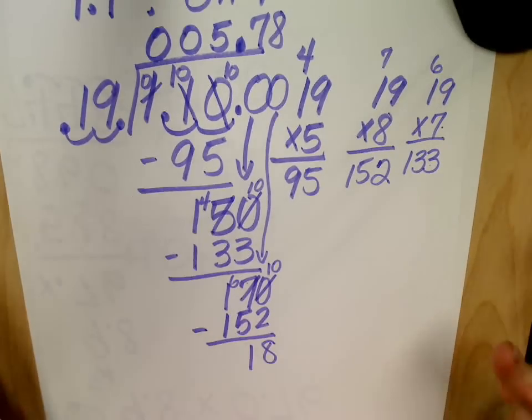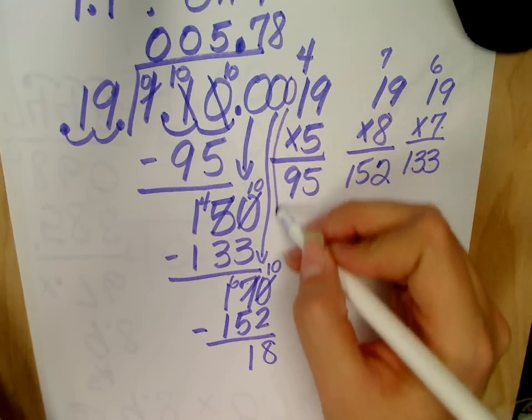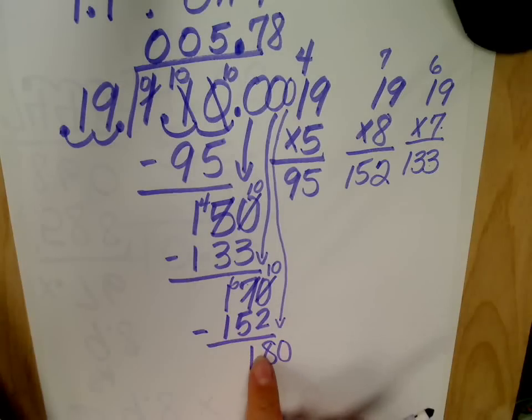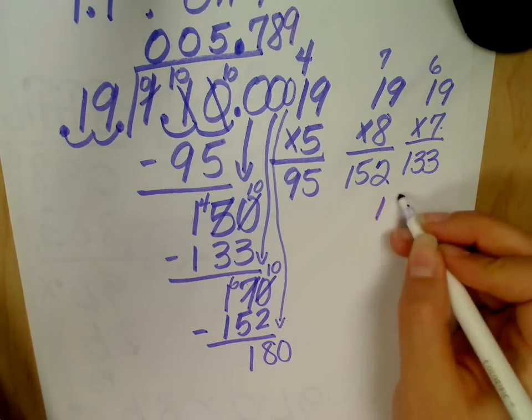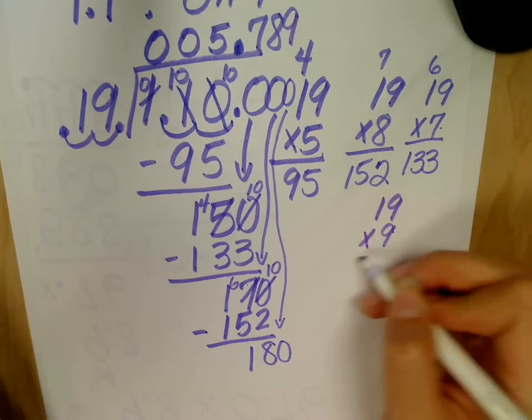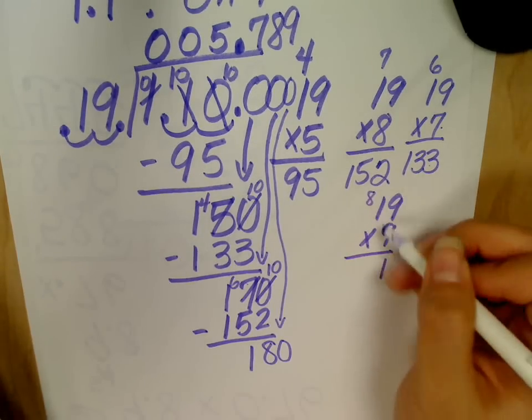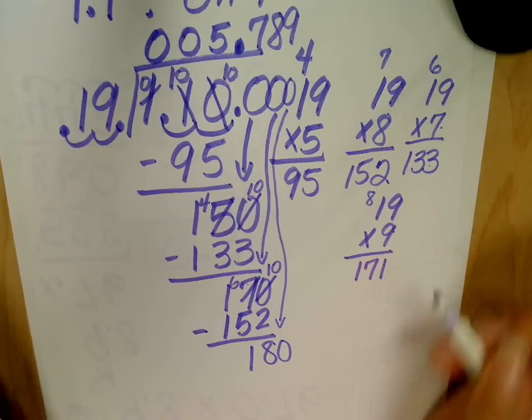Again, I need to keep going. Add a zero. Bring it down. Nineteen into one eighty? Nine times. Nineteen times nine? Nine times nine? Eight-one. Nine times one is nine, plus eight? Seven. One seventy-one.